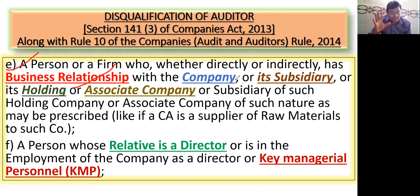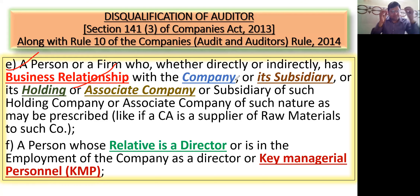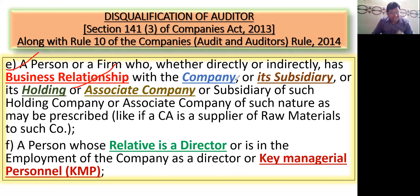If someone has a business relationship with the company, they will be disqualified. Whether it's a company, a subsidiary, holding, associate, or fellow subsidiary — whatever. If my company has a business relationship with any of these, then I'm not going to become an auditor. Simple.